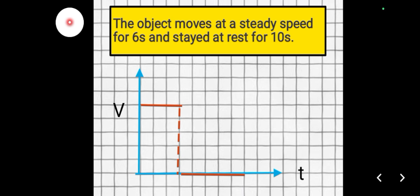Let's confirm the object is really at rest for 10 seconds. Each interval is 2 seconds, so counting: 2, 4, 6, 8, 10. That's correct — the object is at rest for 10 seconds after moving at a steady speed for 6 seconds.